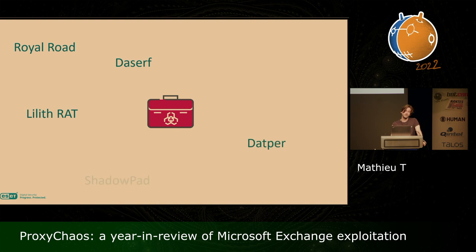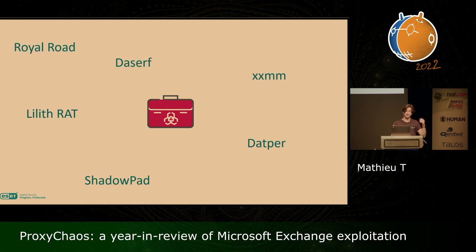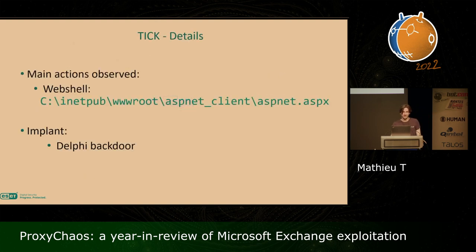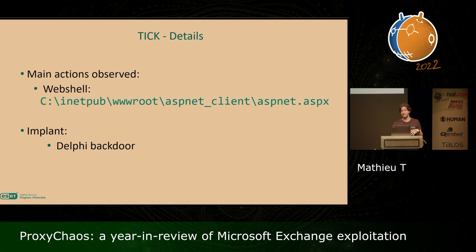TICK's toolset includes the Railroad RTF weaponizer, and they have custom backdoors such as Chavez, Dazef, and Datpur. They also use XXMM, the Lilith RAT which is an open source RAT, and they are now part of the group that have access to the ShadowPad backdoor. On the compromised mail server, they deployed their web shell under the filename aspnet.aspx, and we managed to attribute that compromise to TICK because they tried to deploy a Delphi backdoor that they've already used in the past.